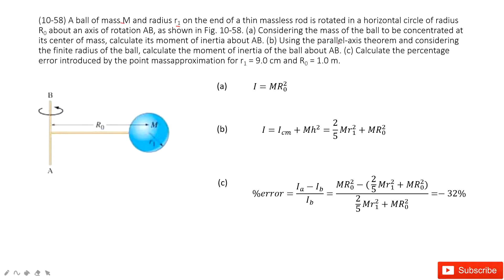In the first part, we consider the mass of the ball to be concentrated at the center of mass. What does that mean? It means we don't need to consider the size and shape of this ball. We just consider it as a simple point.